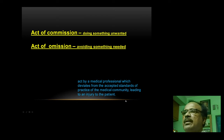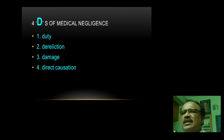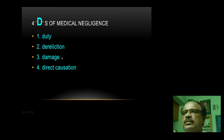Medical negligence can be better explained in the form of the four Ds: duty, dereliction, damage, and direct causation. Duty is a legal duty. Dereliction is nothing but negligence. Damage includes unwanted permanent side effects, injuries, or even death. Direct causation means whatever damage occurred to the patient should be directly related to the negligent action of the doctor.